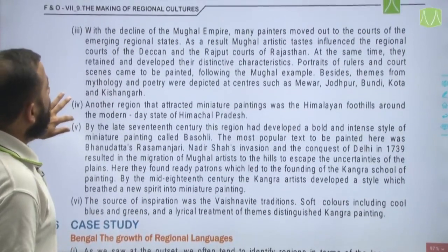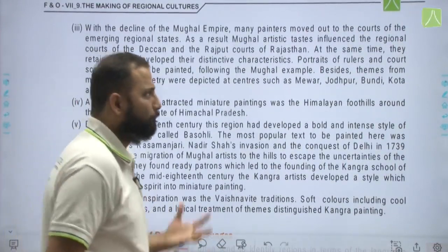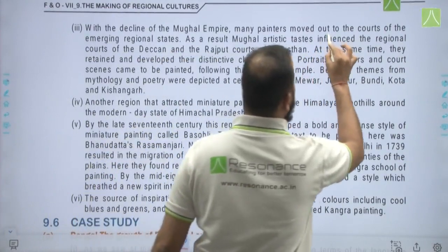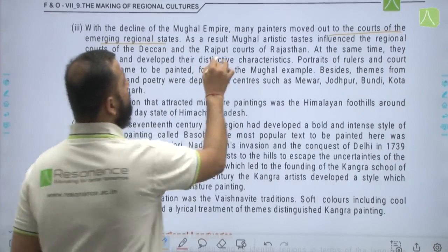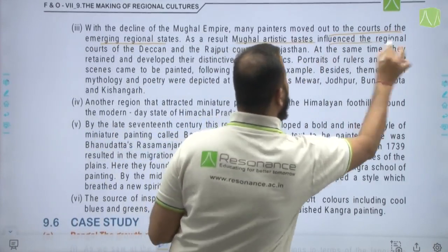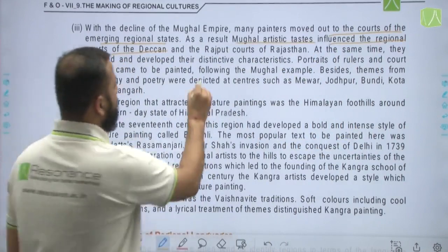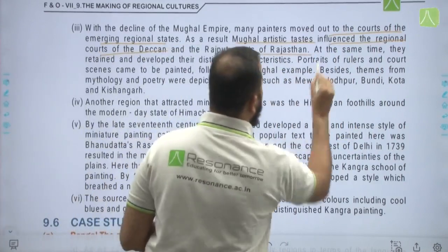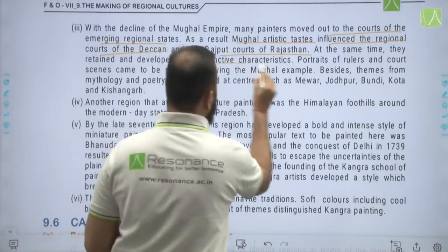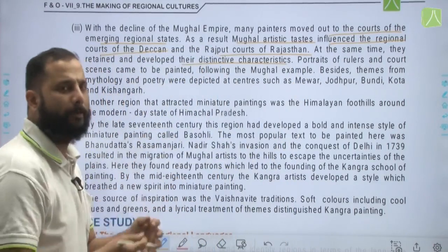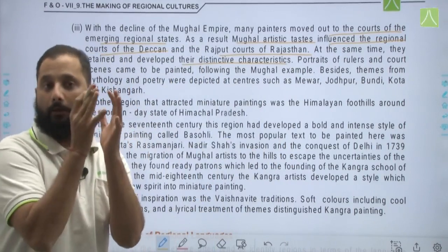With the decline of the Mughal empire, many painters moved out to the courts of emerging regional states, since the Mughal court could no longer pay them well. As a result, Mughal artistic taste influenced the regional courts of the Deccan and the Rajput courts of Rajasthan. At the same time, these regional schools retained and developed their own distinctive characteristics.